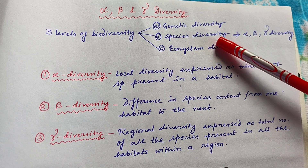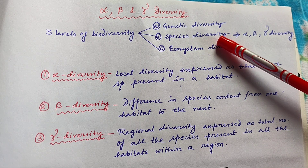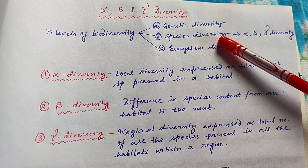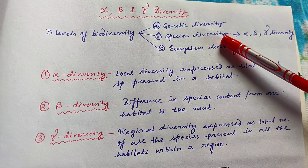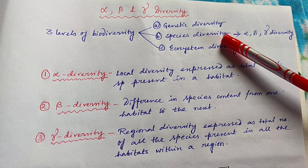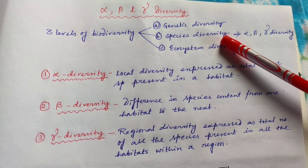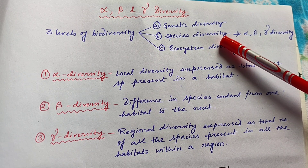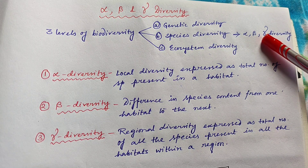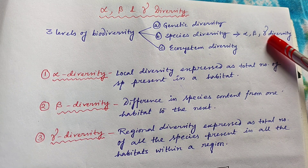So first of all, what is species diversity? Species diversity means diversity of different species within a community in terms of their species richness and relative abundance. And under species diversity, we get these three components: alpha, beta and gamma diversity.